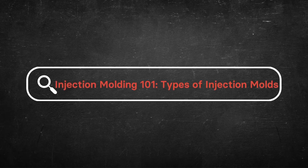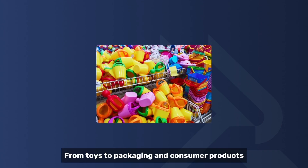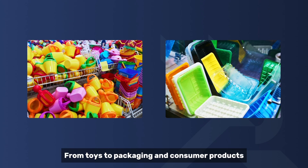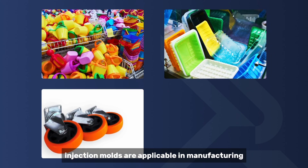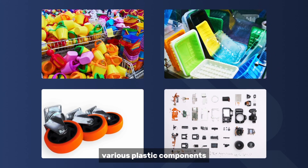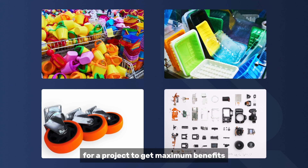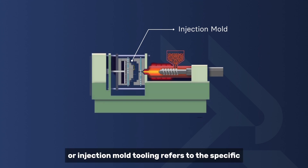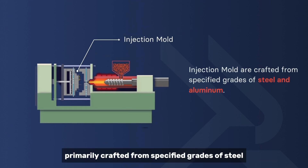Injection Molding 101 – Types of Injection Molds. From toys to packaging and consumer products, injection molds are applicable in manufacturing various plastic components. You must use the right injection mold for a project to get maximum benefits. Injection mold, or injection mold tooling, refers to the specific capital assets used for producing plastic components, primarily crafted from specified grades of steel and aluminum.